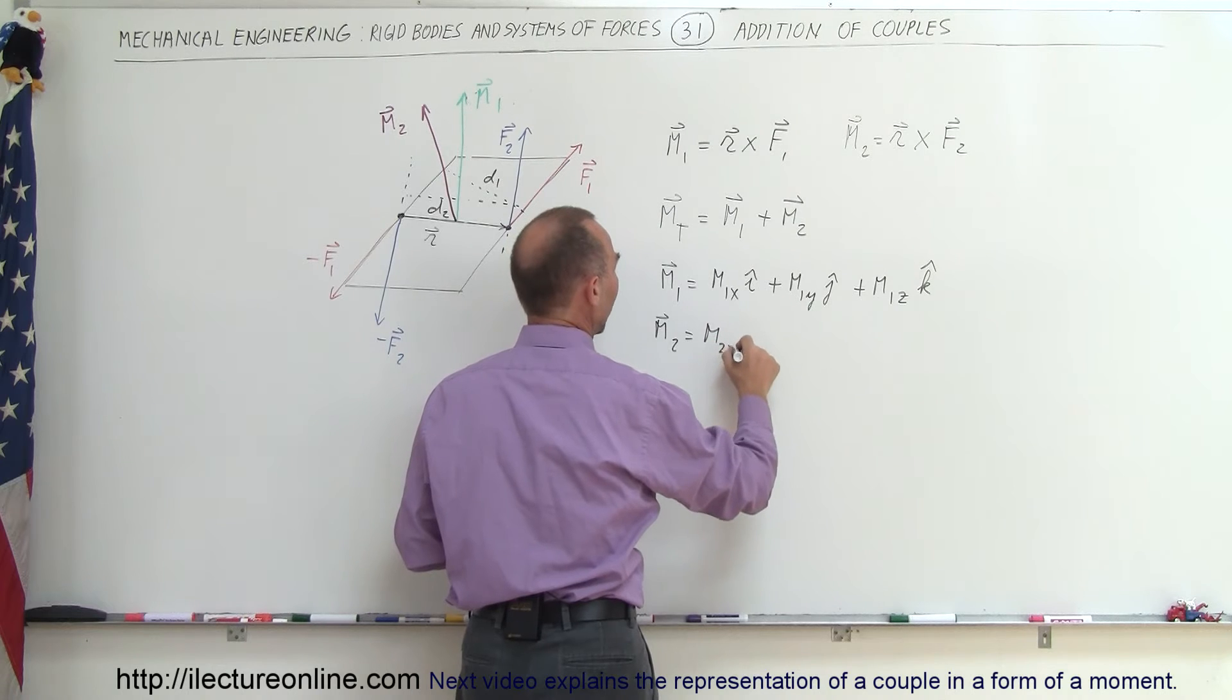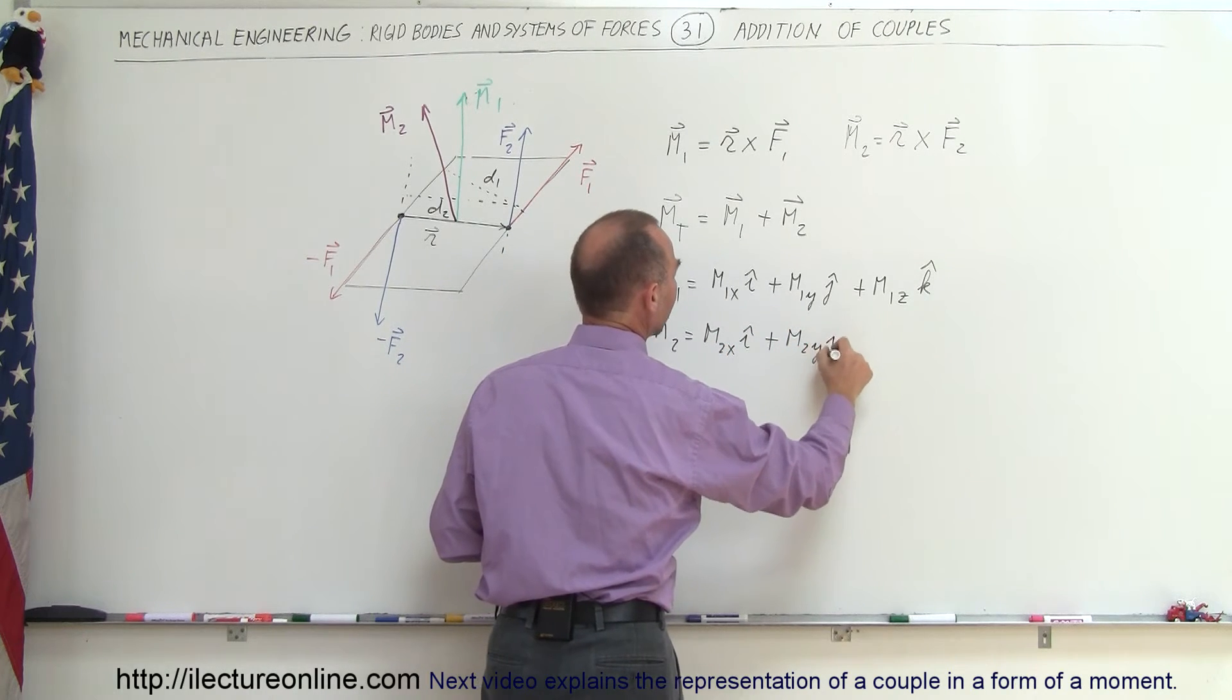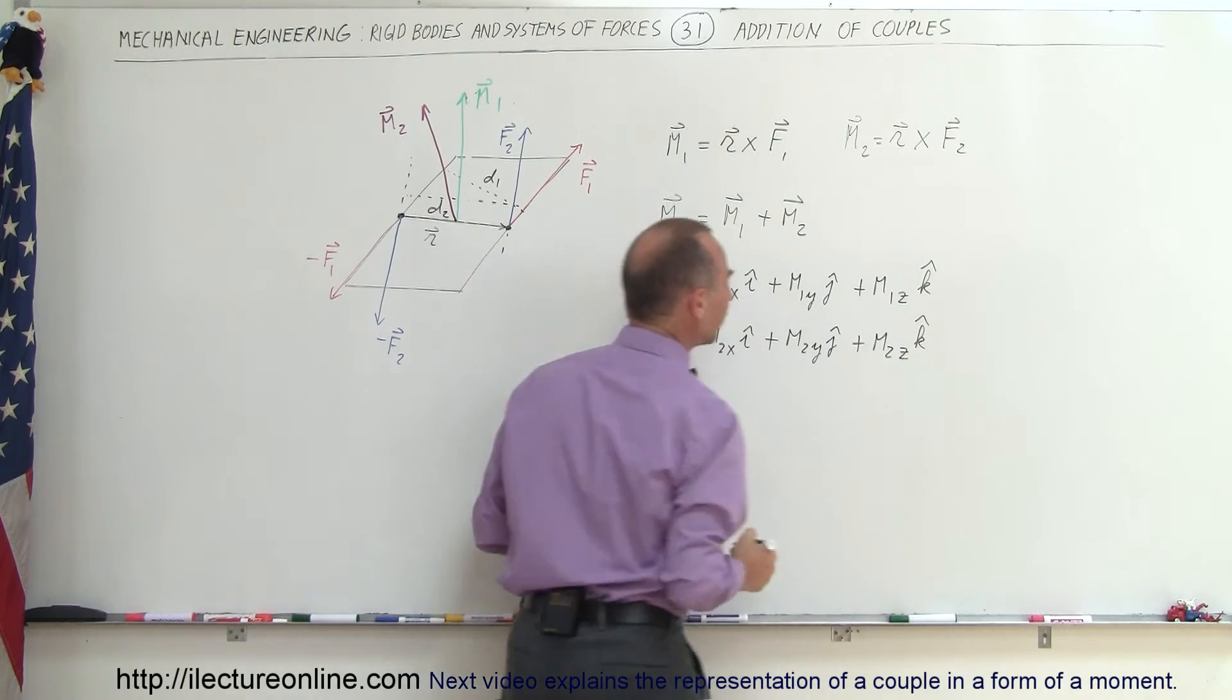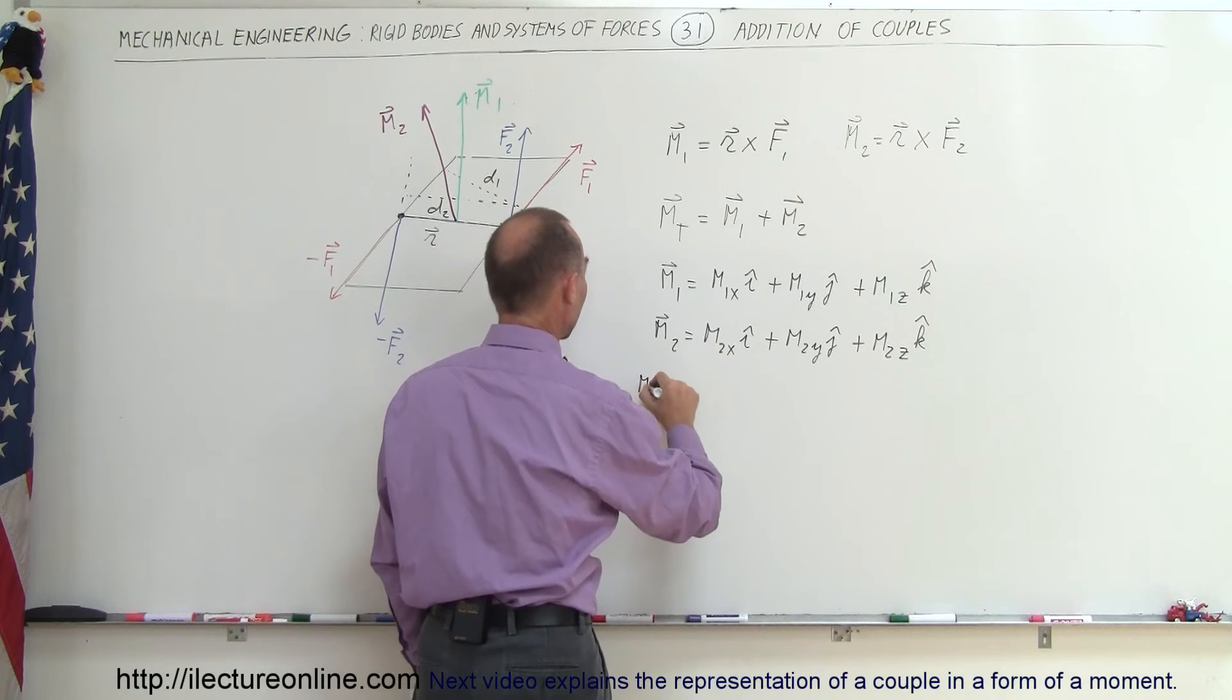And let's say that M2 is equal to M2 in the Y direction, plus M2 in the Z direction. And then, of course, if we're going to add the two together, we can then say that M total, which is simply equal to the sum of the two moments,